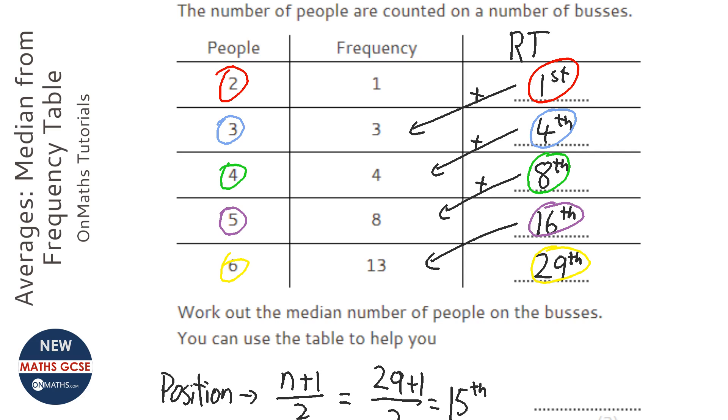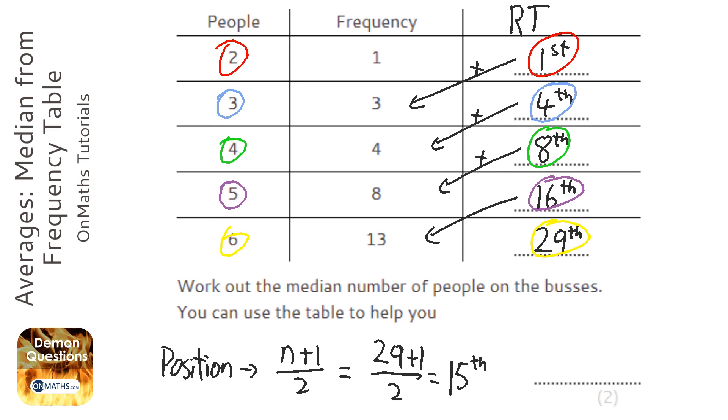We're looking for the 15th value. If the eighth value is the biggest one in the four people group, then the 15th value must be in the group of five people.